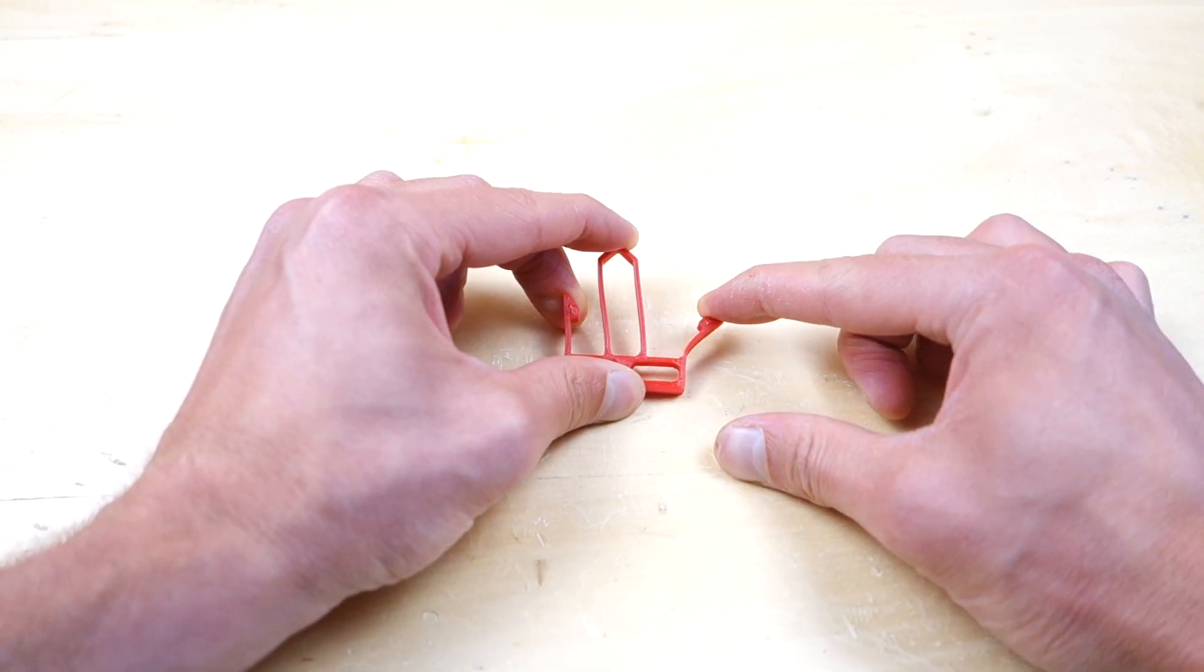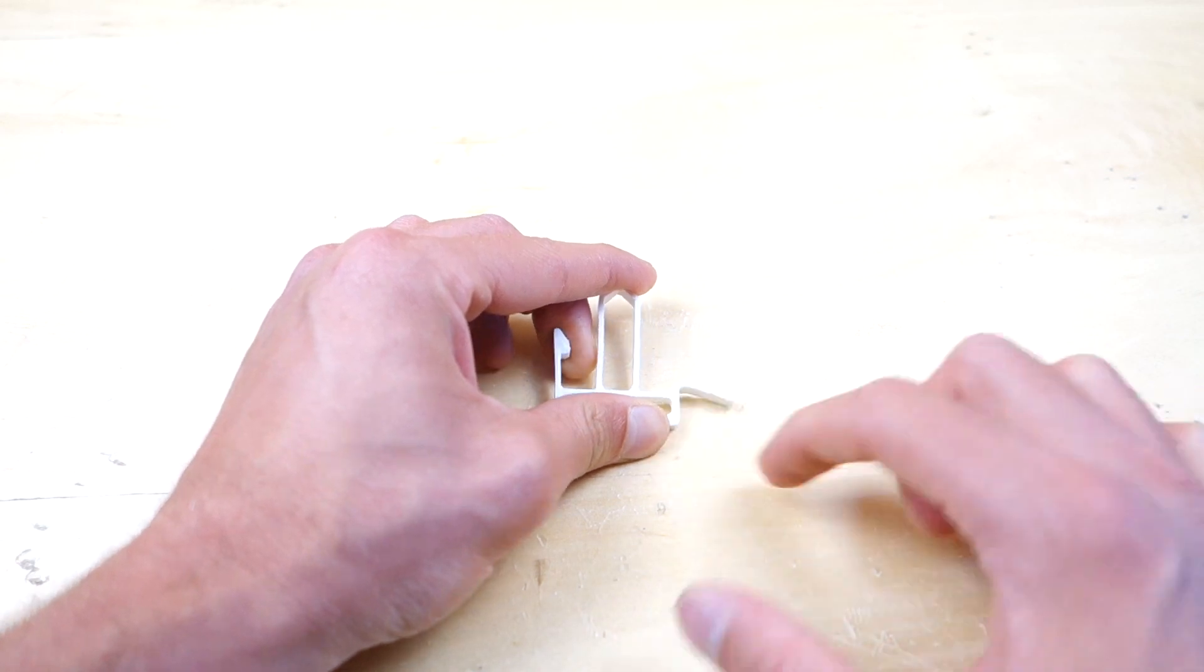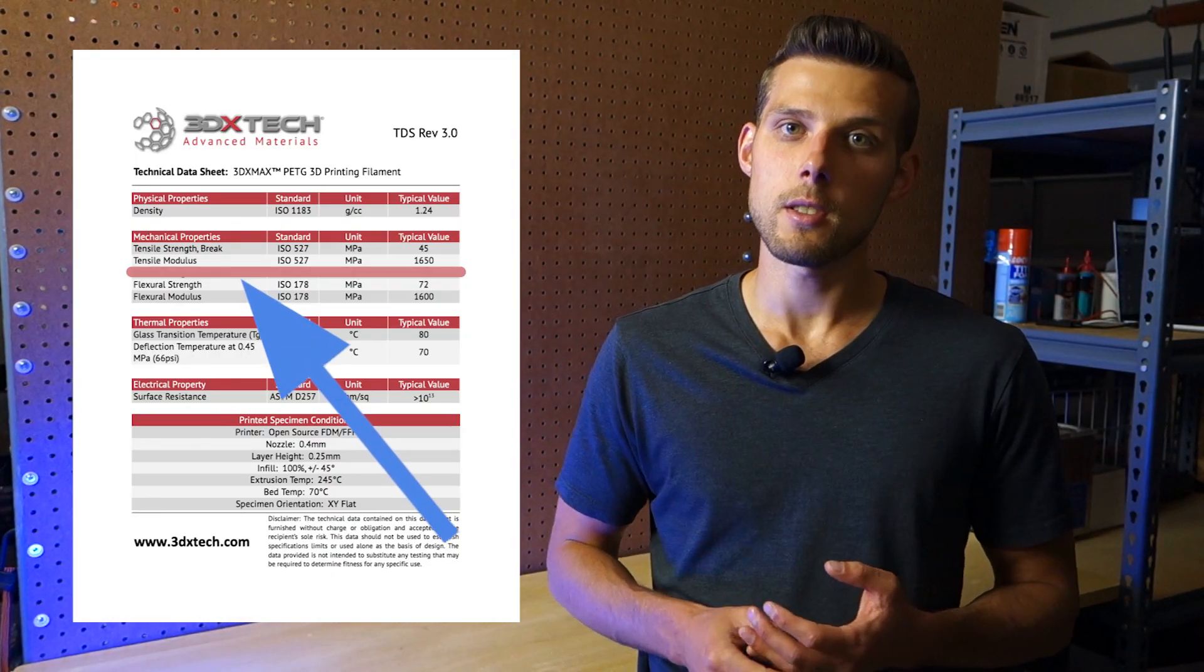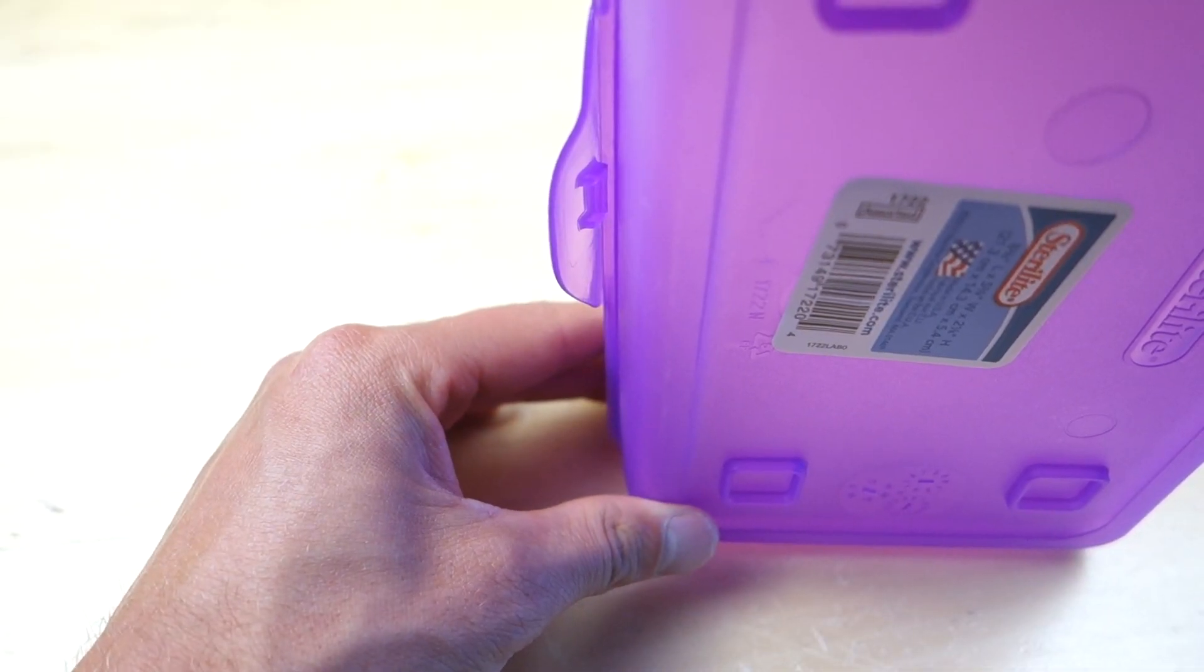Are you struggling to select the right material for your snap fit joints so that your parts snap together without breaking? Well in this video we will review the number one thing you need to look for in a material so that your hooks snap in place and hold your parts together.